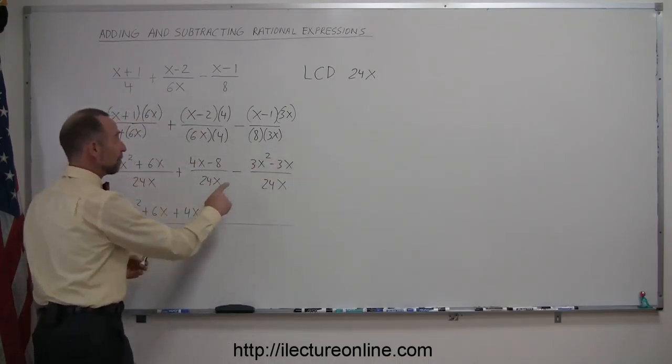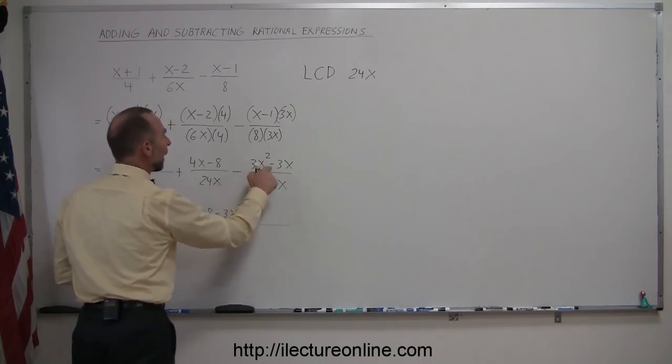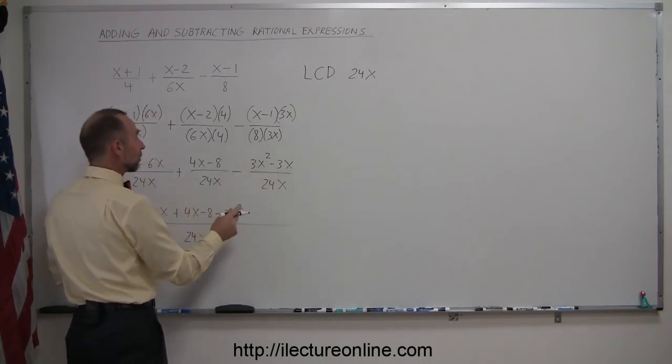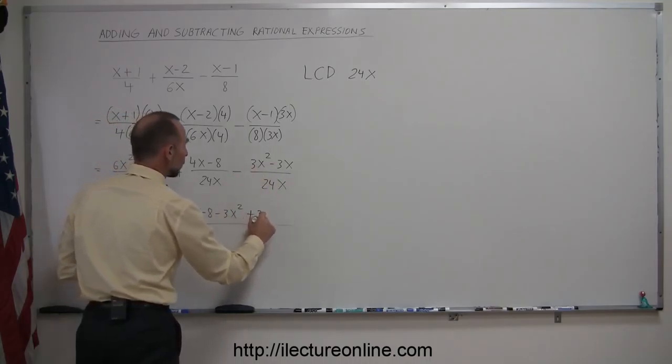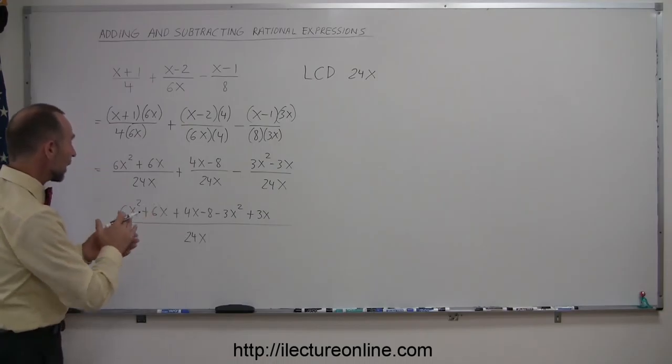So when we subtract, we have minus the 3x squared. And minus a minus gives us a positive, they cancel out, so this becomes a plus 3x. So be very careful about those signs.